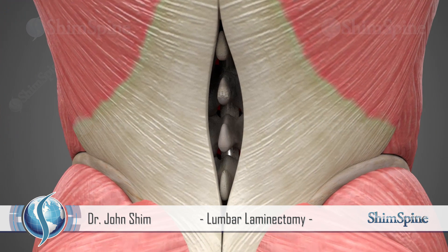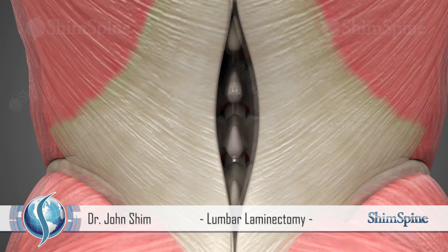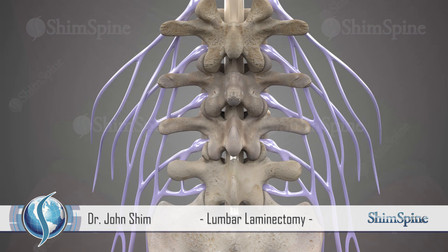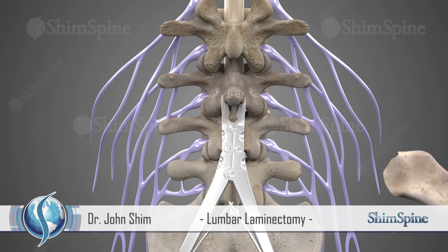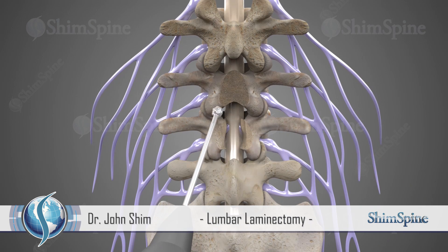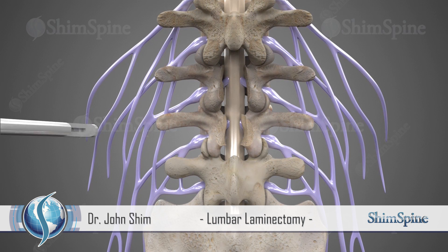Typically, more than one level needs the laminectomy. Muscles are gently retracted to allow visualization of the bony covering or lamina and the ligament that covers over the spinal canal. Depending on the level, some of the bone will need to be removed to allow access. Tools, including burrs, Kerrison punches, and curettes, aid in the removal of the covering bone and ligament.